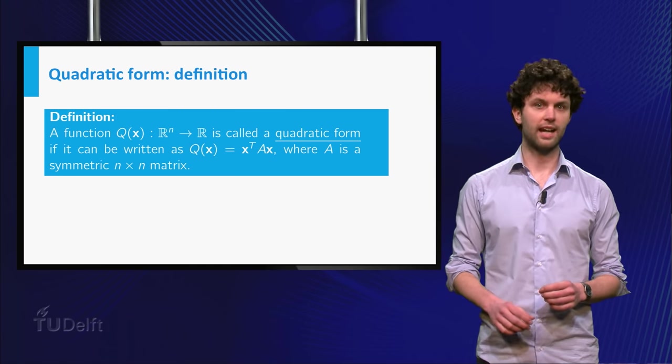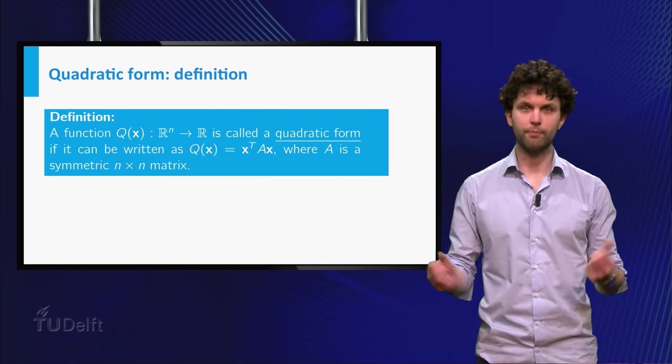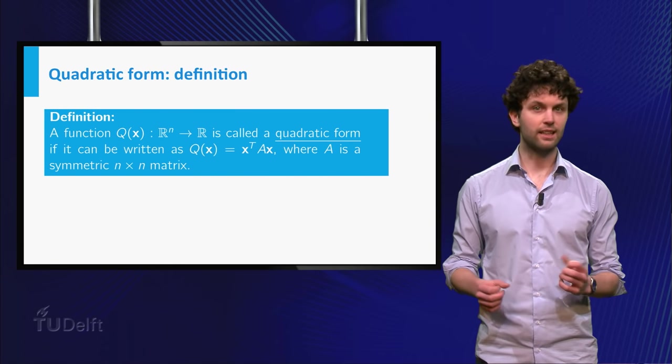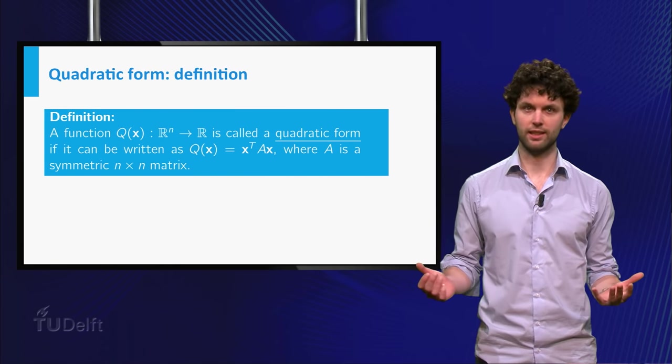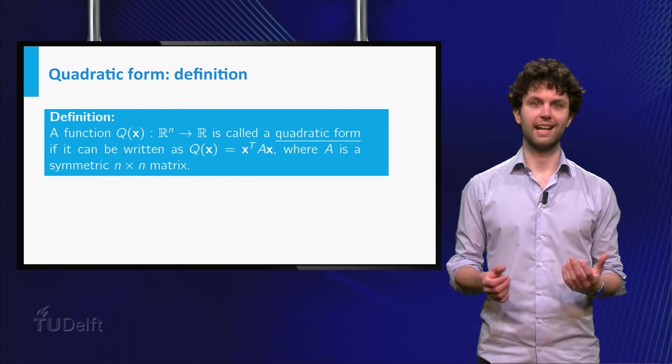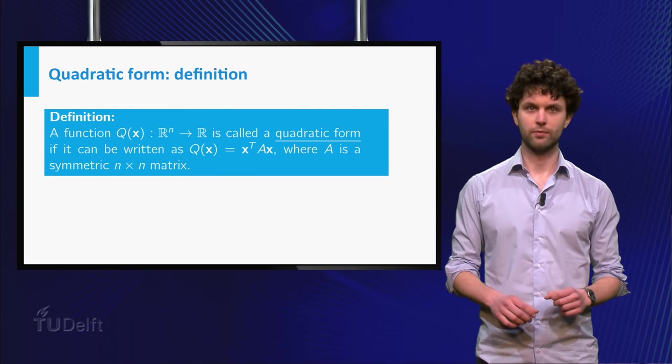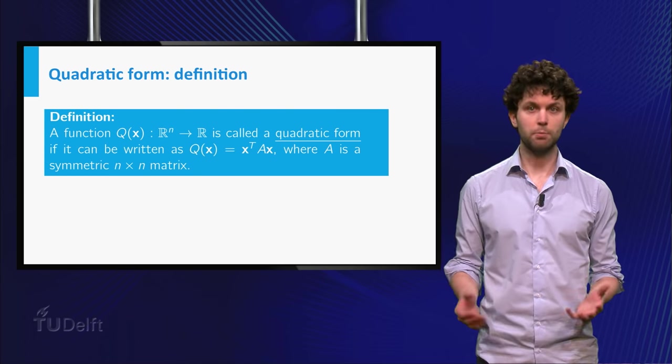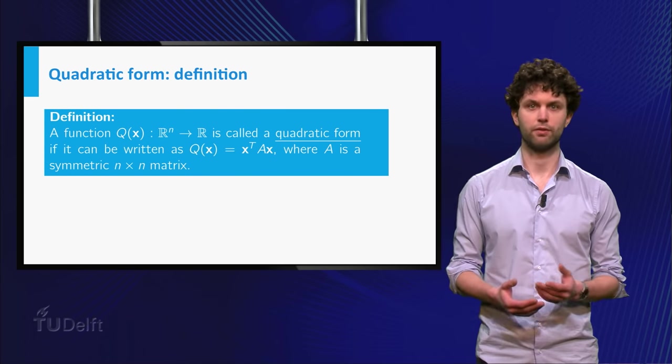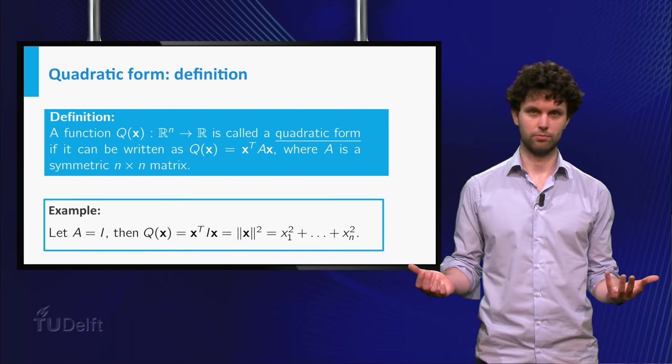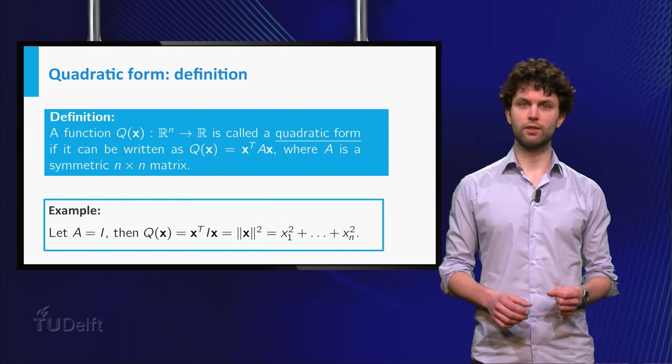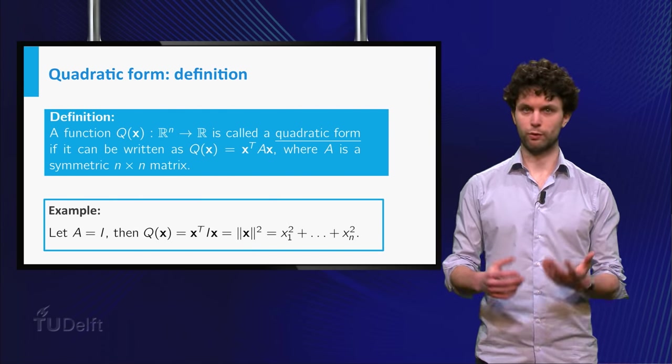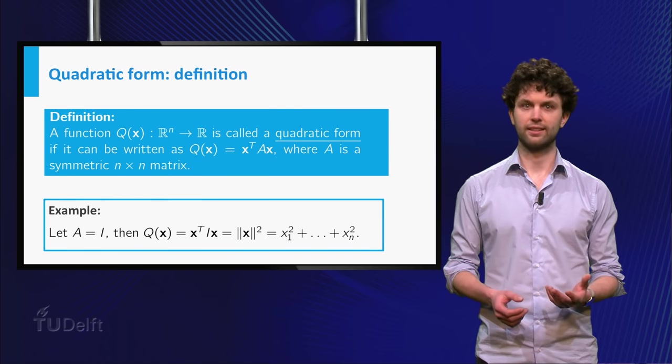A function Q(x) on Rⁿ is called a quadratic form if it can be expressed as x transpose times a matrix A times x, where A is a symmetric n×n matrix. We call A the matrix of the quadratic form. The simplest example of a quadratic form is a function which is quite familiar. Take as matrix the identity matrix, then we obtain as quadratic form the length of x squared.